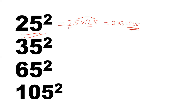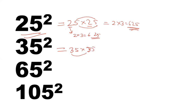Remember the condition: tens digits are same and the sum of unit digits is 10. Take the tens digit and multiply it with the next counting number, then write down the unit digit product. For 35 squared — 35 into 35 — multiply 3 by 4 to get 12, and 5 by 5 is 25. So the square of 35 is 1225.